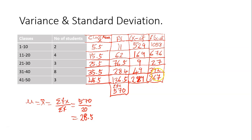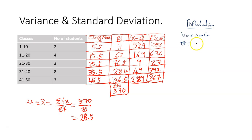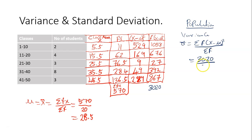Now to find variance and standard deviation. If the question is a population question, the symbol for population variance is sigma squared, which equals the sum of f times deviation squared divided by the sum of f. The sum of f times deviation squared is 3020. So 3020 divided by sum of f, which is 20, gives us 151.